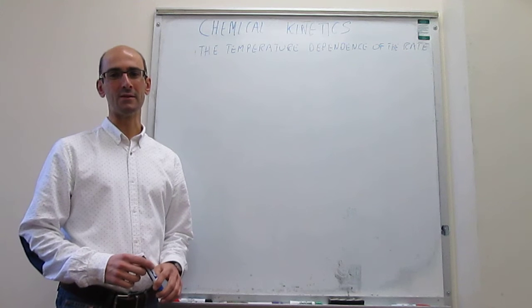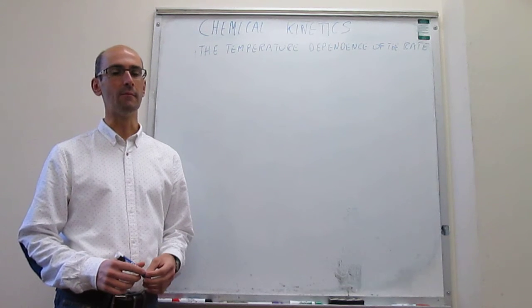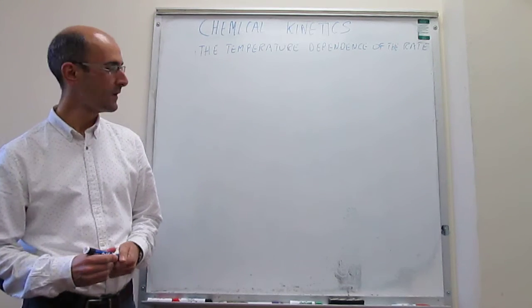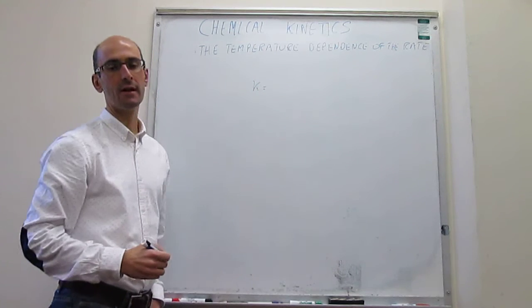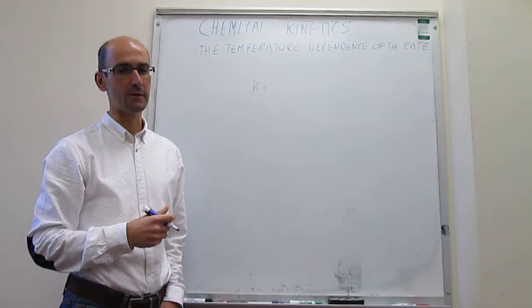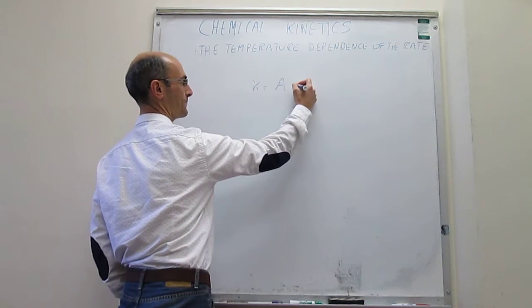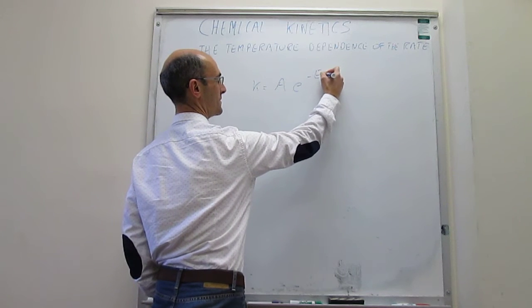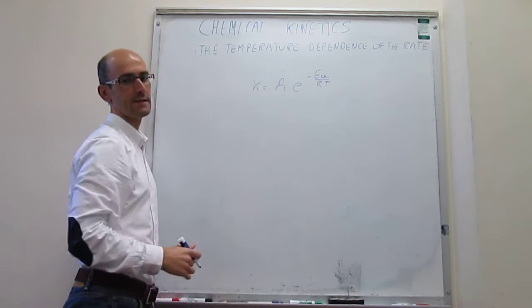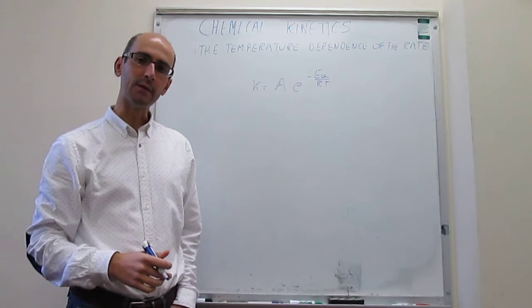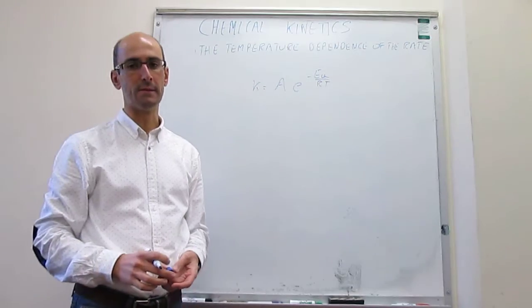In this video, we wrap up the discussion of the dependence of the rate on the temperature by doing a numerical example with the Arrhenius expression. We've said that the dependence of the rate on the temperature enters the rate law through the rate constant. And we can see, using the Arrhenius expression, that the dependence of that rate constant on the temperature has this functional form, and we have explained what the pre-exponential factor A is and what the activation energy means as well.